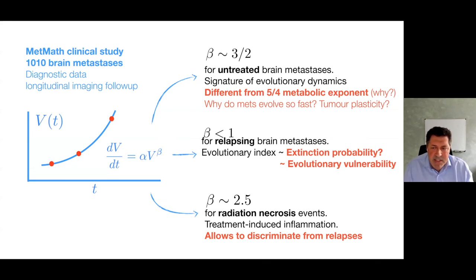For relapsing brain metastases, we've got exponents smaller than 1. Visually you see growth, maybe fast growth, but the exponent is not that high. This is an indication of reduced evolutionary dynamics and less heterogeneity after treatment. Maybe we can use this exponent as a signature, a biomarker of evolutionary vulnerability or extinction probability. It's something that has to be explored in more detail.